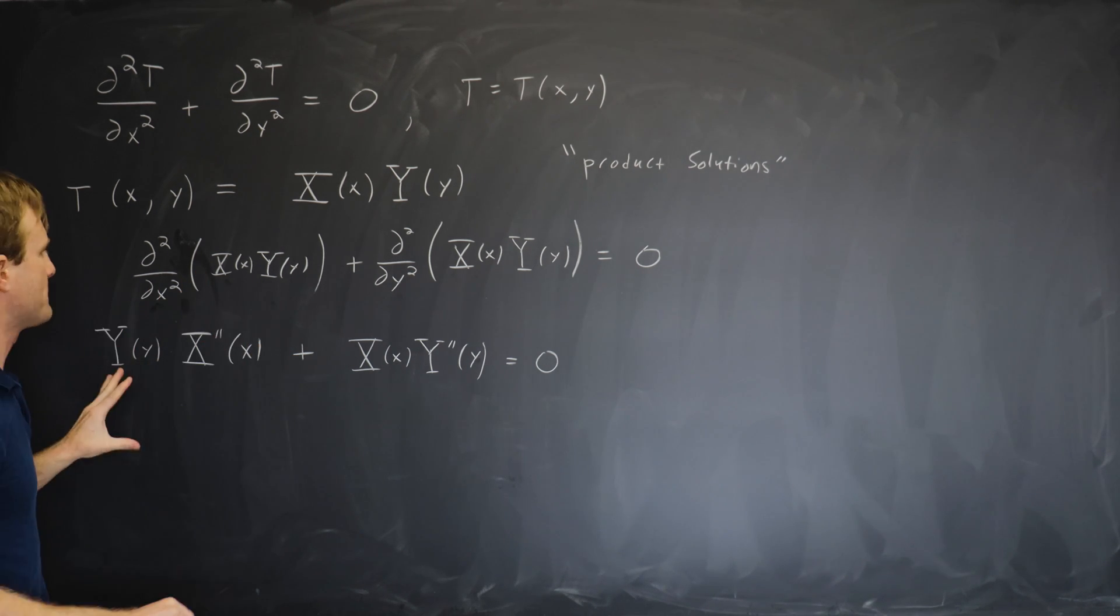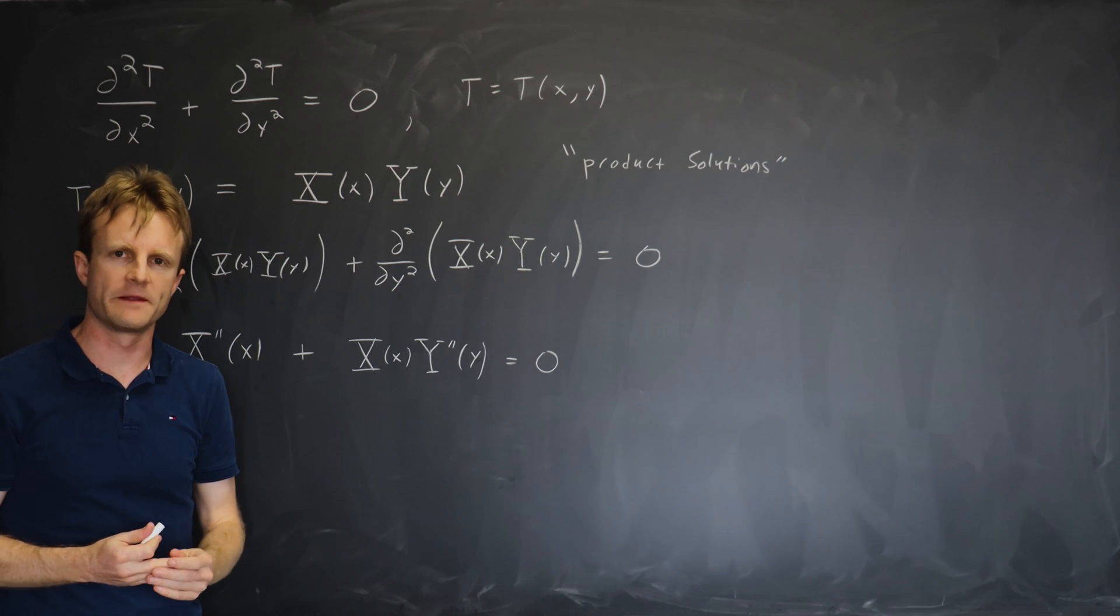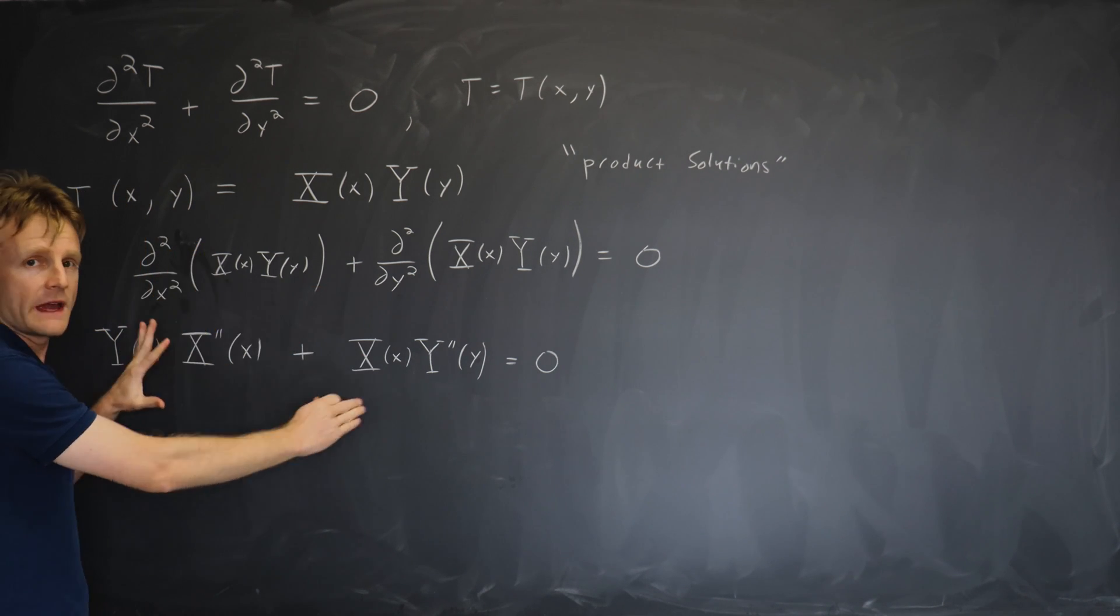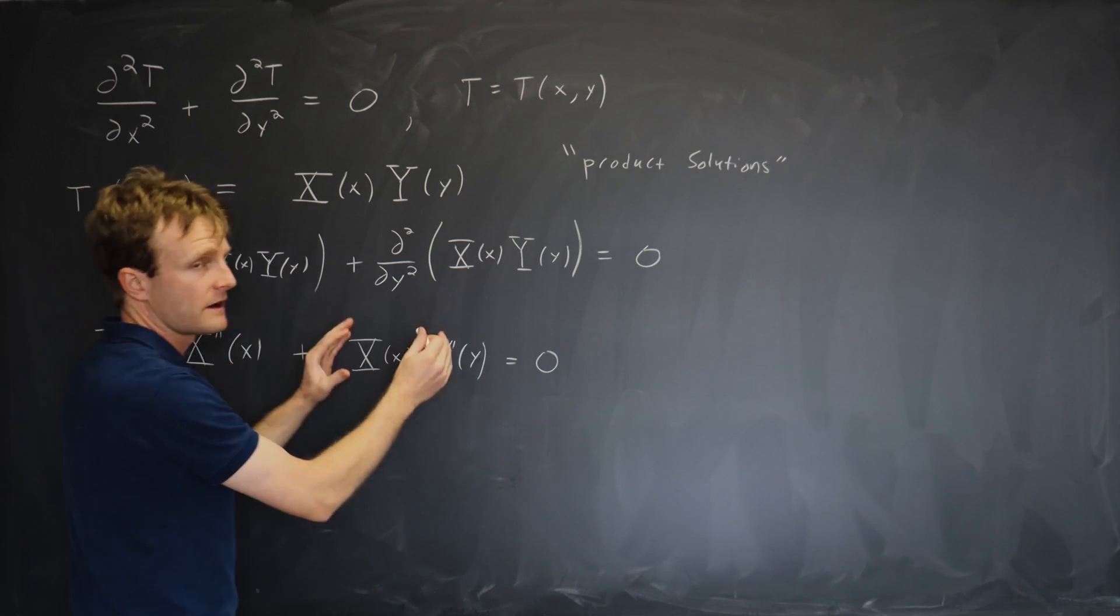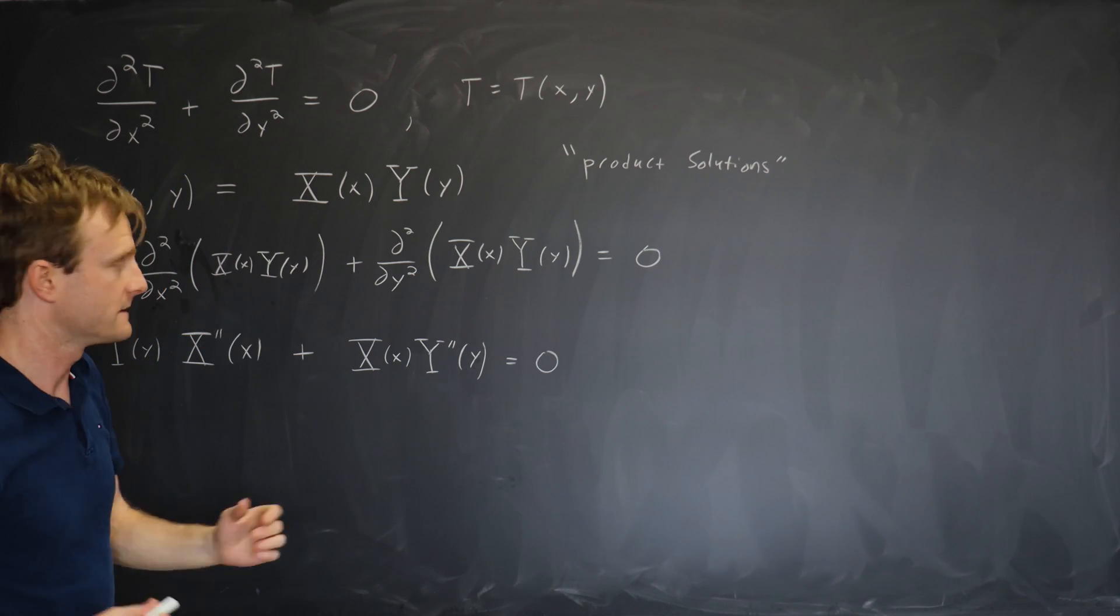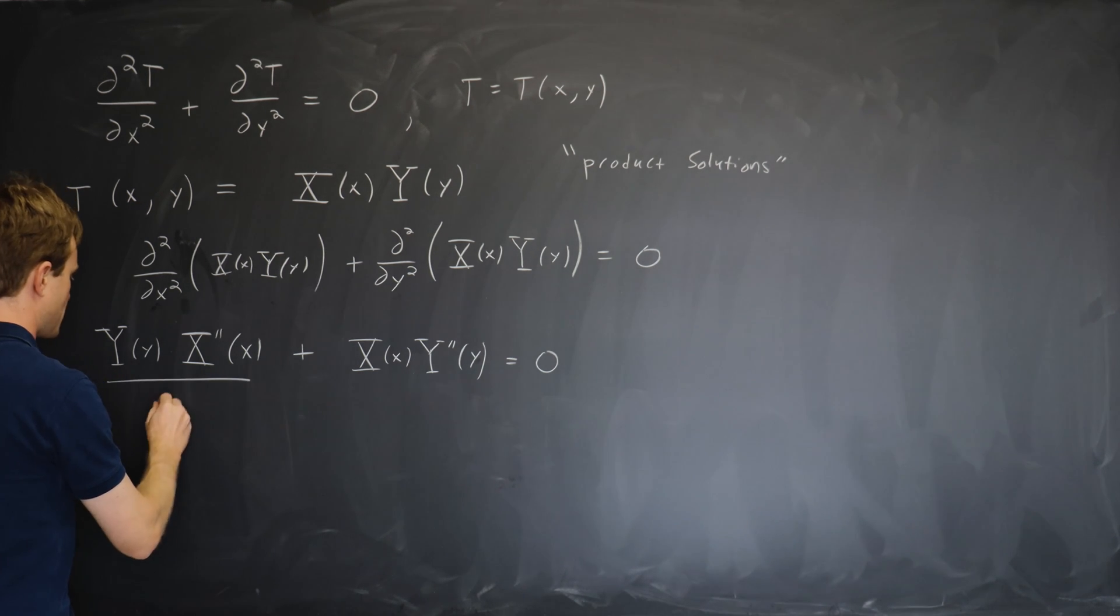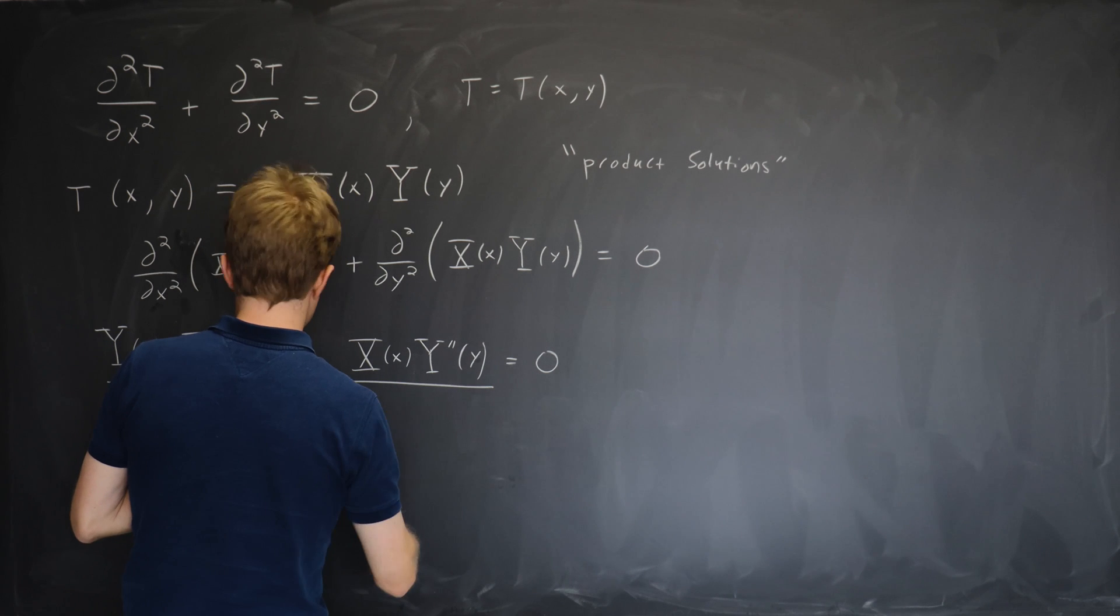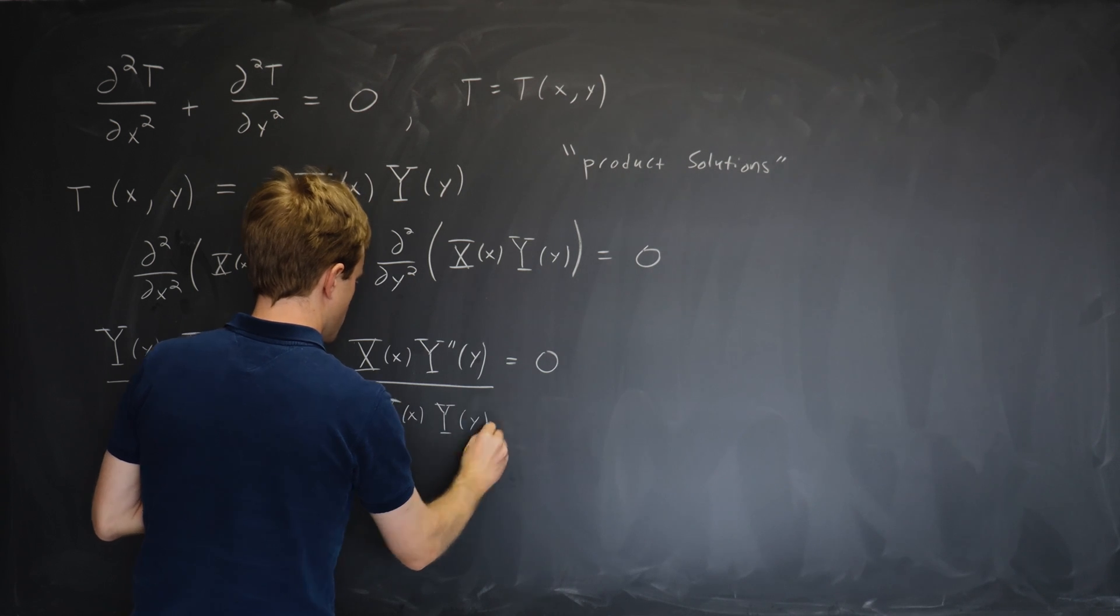But it's still mixed up. There's x dependence and y dependence all over the place. It's not really an ordinary differential equation yet. So here's the key idea of separation of variables. We want to play around with this until it looks like stuff just involving y equals stuff just involving x. We want to separate the variables on each side of the equation. So to do that here what we do is we divide by capital X of little x times capital Y of little y. And we need to do that on both sides.